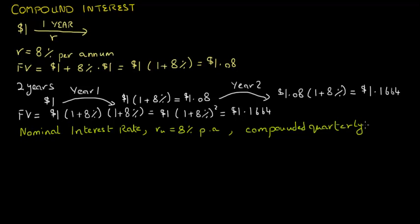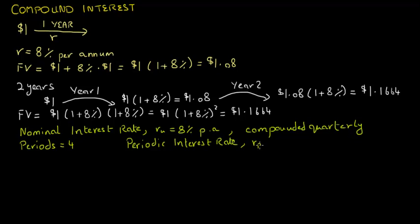When we say the interest rate is 8% per annum but quarterly compounded, that means the annual interest rate is 8%, but each year is divided into 4 periods. The periodic interest rate, denoted by Rp, equals the nominal interest rate of 8% divided by the number of periods, which is 4, giving us 2%. This means that every quarter, your deposit will accumulate interest of 2%.